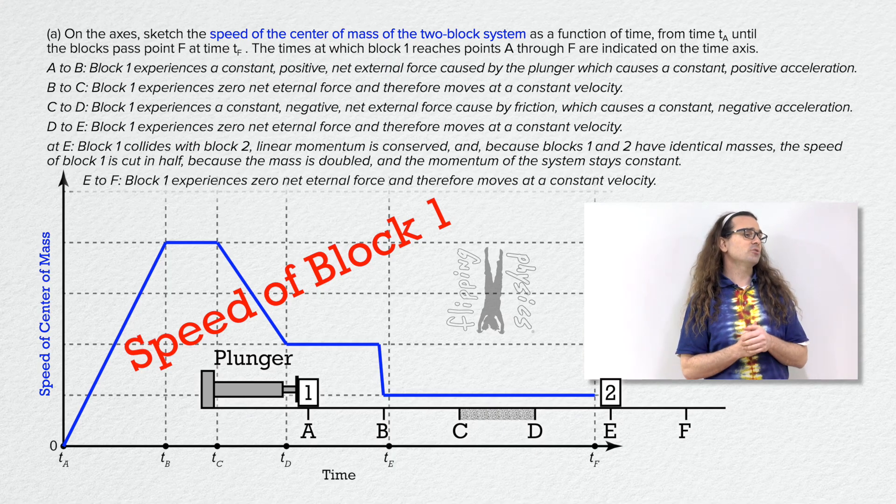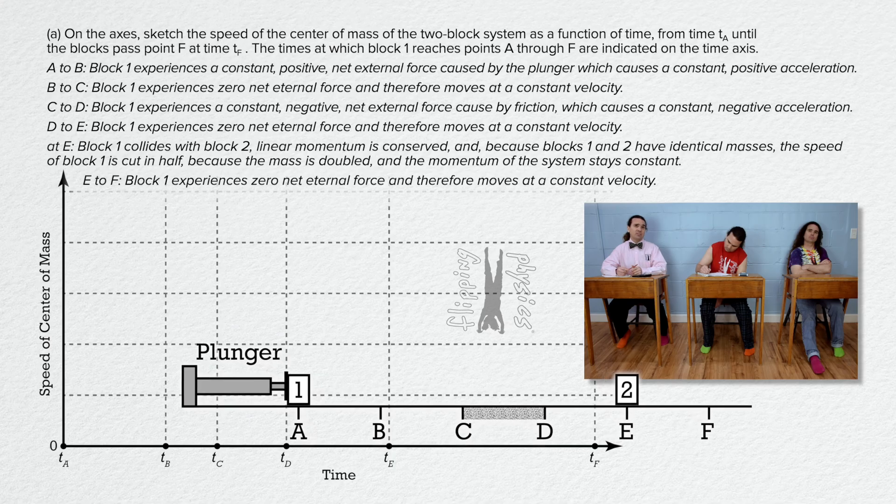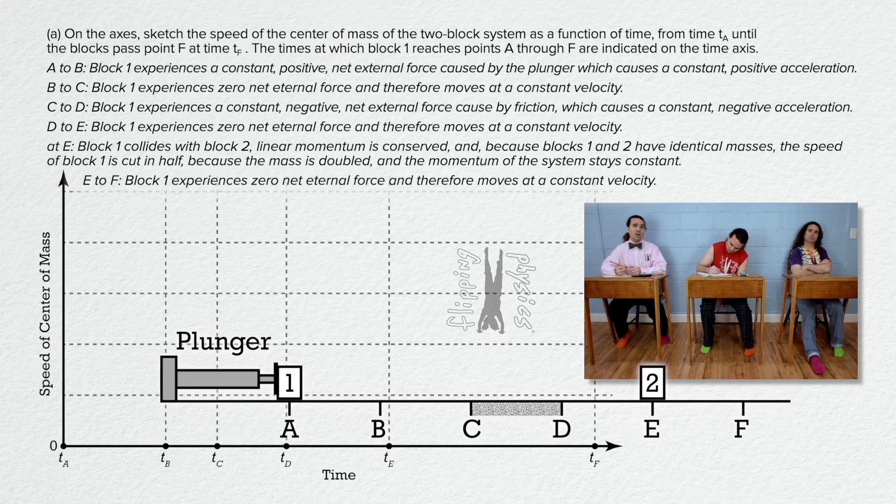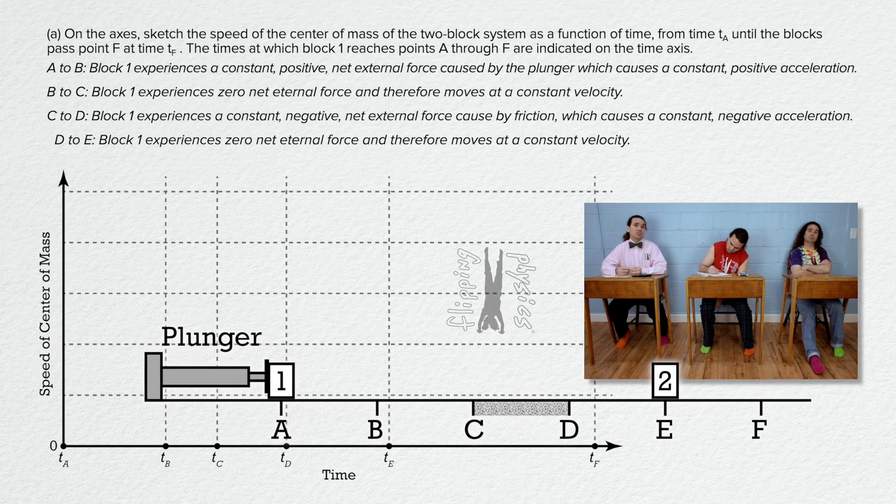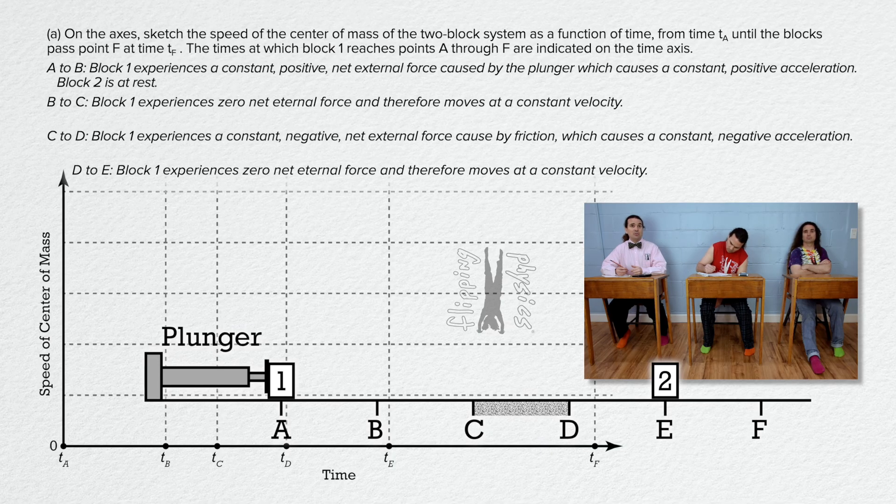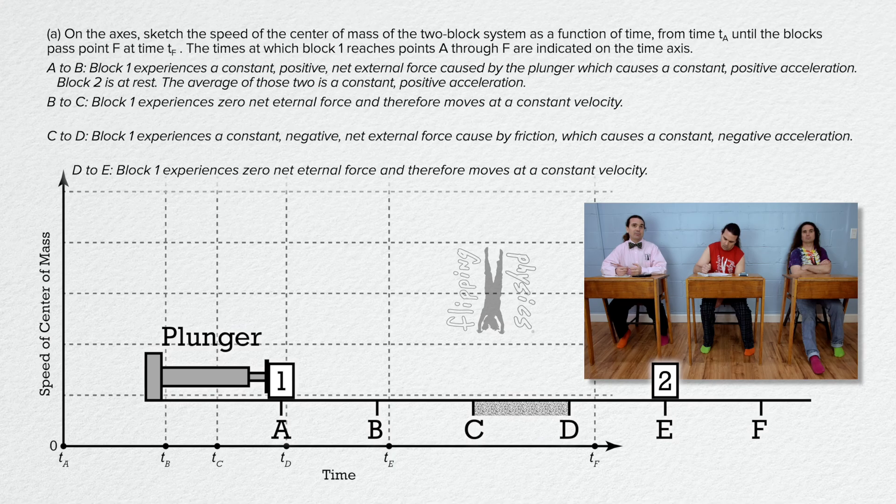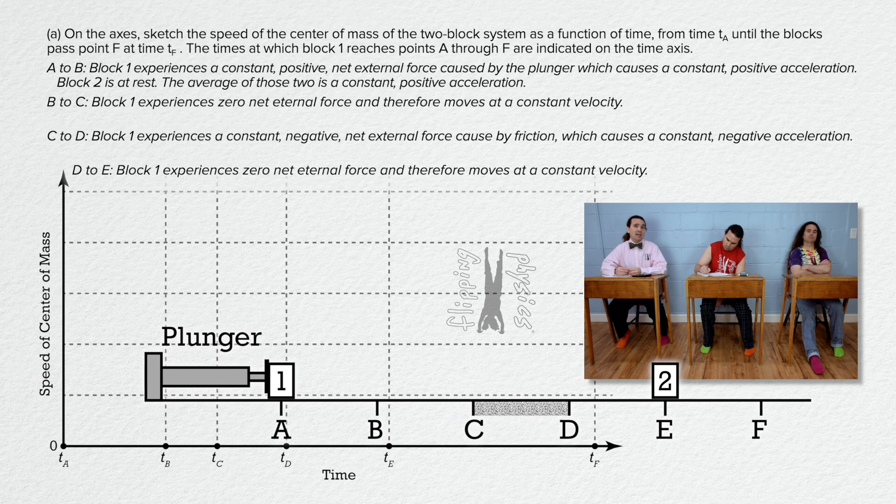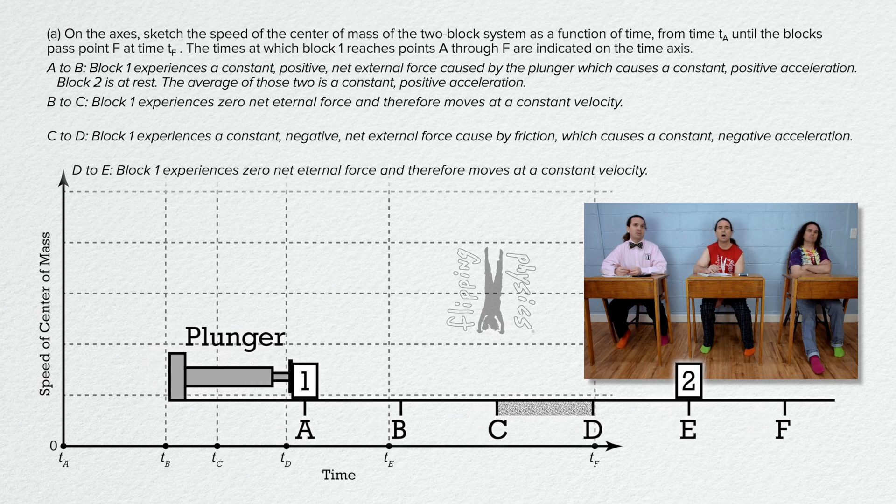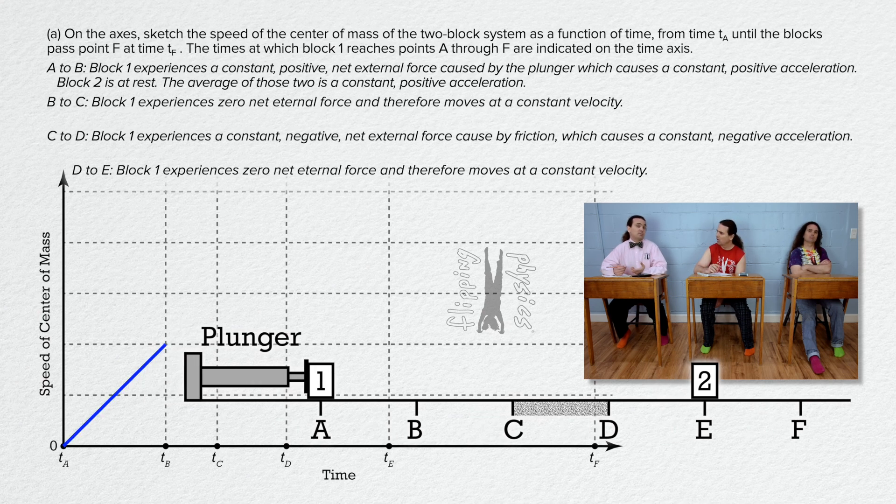So Billy, please fix your solution. Okay, well, everything I described was just for block 1 but it is still correct. So from A to B, block 2 is at rest. The average of a constant positive acceleration and at rest is still a positive constant acceleration just with a smaller magnitude. So again, draw a line with a constant positive slope from time A to time B just with a smaller magnitude.